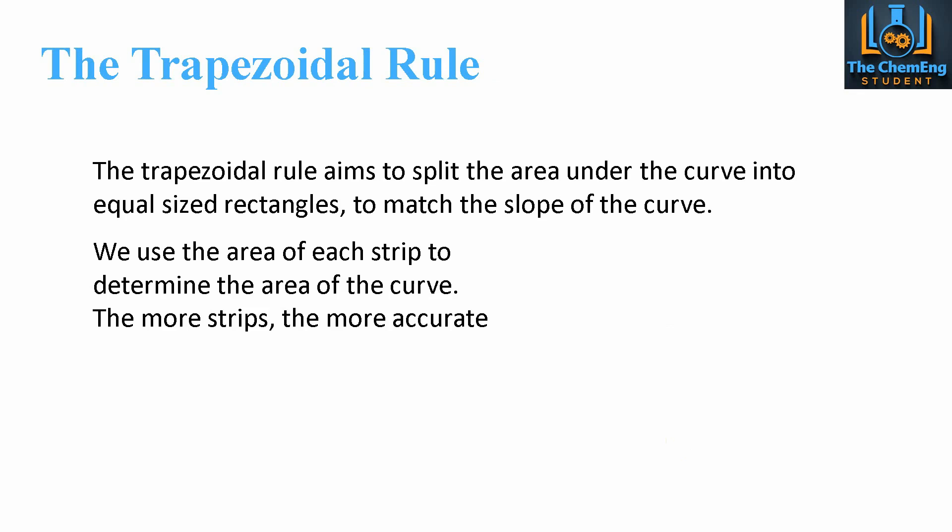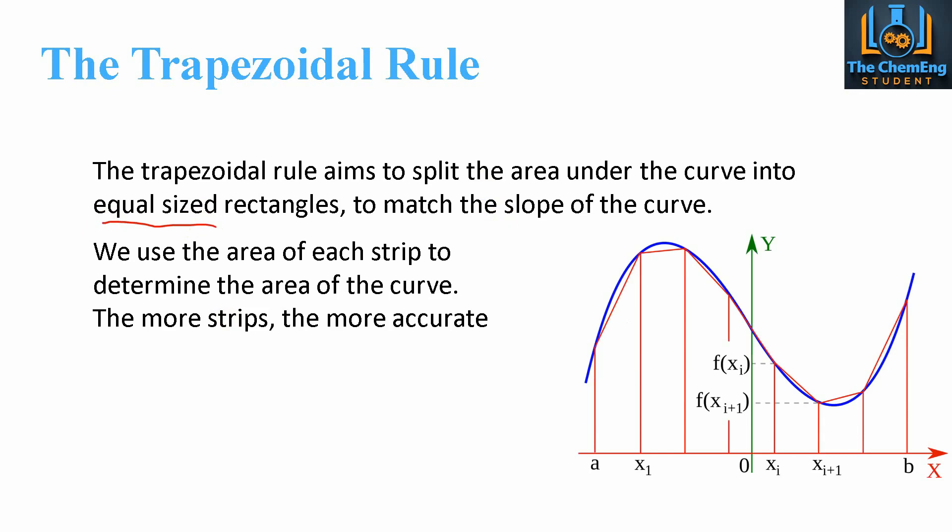So the trapezoidal rule essentially aims to split the area under the curve into equal-sized rectangles. Now the clue here, or a key parameter, is equal-sized, and we'll talk about that in just a second. Now it aims to match the slope of the curve, and we can use the area of each strip in order to determine the total area under the curve. So a system would look something like this. So we can clearly see that each one of these rectangles has a distance of x. Now this distance of x is exactly the same for every single rectangle.